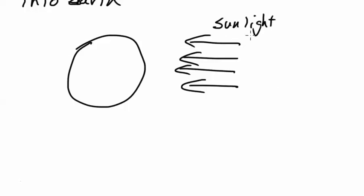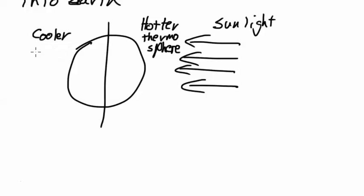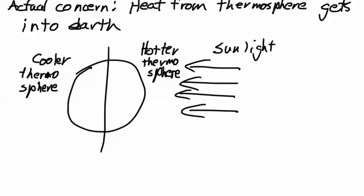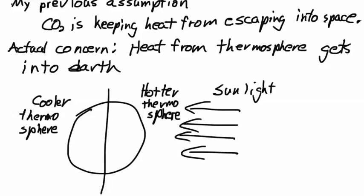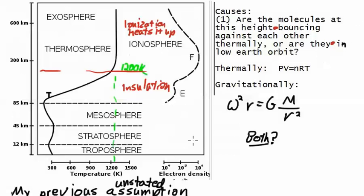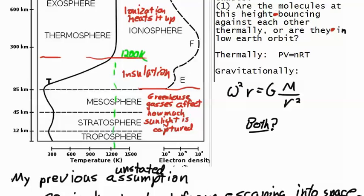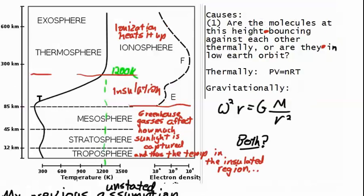So the actual concern is that the heat from the thermosphere gets into the Earth. Now there's going to be a perspective of this, that the sunlight causes a hot thermosphere on one side, and a cooler thermosphere on the other side. So really you're more concerned about the heat coming into the system from this side than we are about the heat coming into the system from that side. But in any case, in this region, greenhouse gases are going to affect how much sunlight is captured.